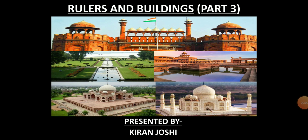Hello everyone, I am Kiran Joshi. Hope you all are doing good. Here I am presenting the third video of Class 7 History Chapter 5 - Rulers and Buildings. In the second video of this chapter, we learnt that places of worship were constructed to show the power, wealth, and devotion of the ruler, and that in the medieval period, rulers displayed their strength and military success by attacking and looting the places of worship of defeated rulers.